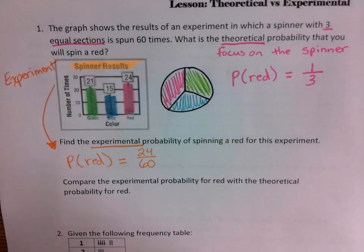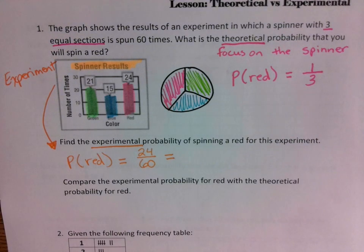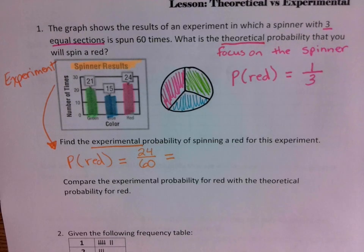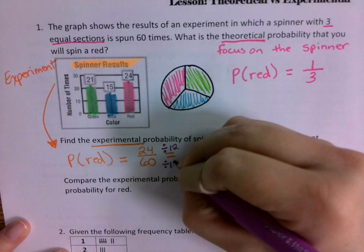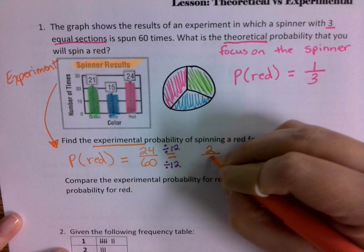So 24 out of 60 — can that be simplified? Yes, because they're both even, so they're divisible by two. They also both happen to be divisible by six, and by 12. I'm going to go ahead and divide both by 12, which gives me two out of five. So two-fifths of the time it landed on red.